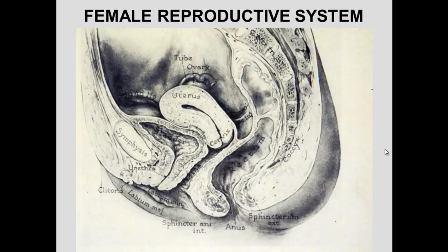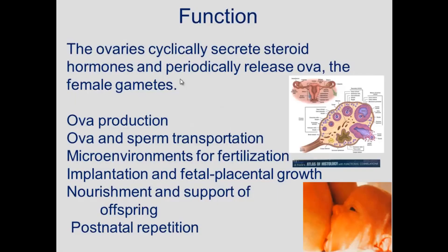Here we can see the female reproductive tract. Here's the uterus, cervix, vagina, labia minora, labia majora, and clitoris. Up here we can see the ovary and the fallopian tube. Those are the parts of the female reproductive tract.